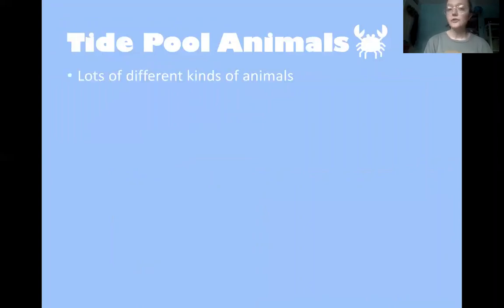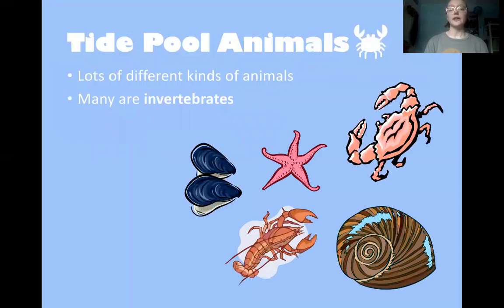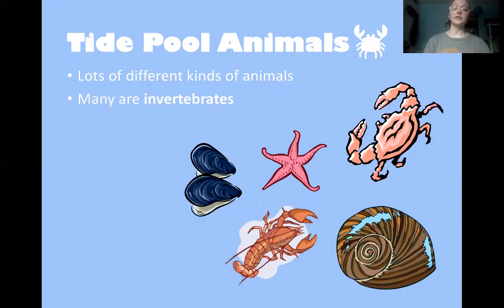Tide pool animals — there are a lot of different kinds. Many of them are invertebrates, which are animals that do not have backbones and oftentimes don't have bones at all. A lot of these animals, because they're vulnerable without bones, have hard outer shells for protection. These are animals such as crabs, lobsters, and clams. Their outer shell protects them against other animals that might eat them.